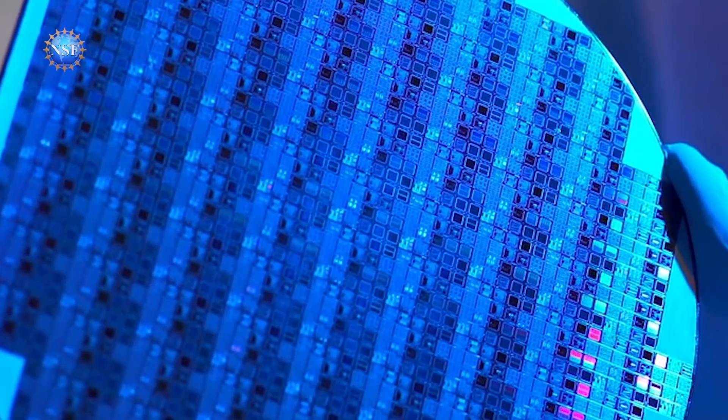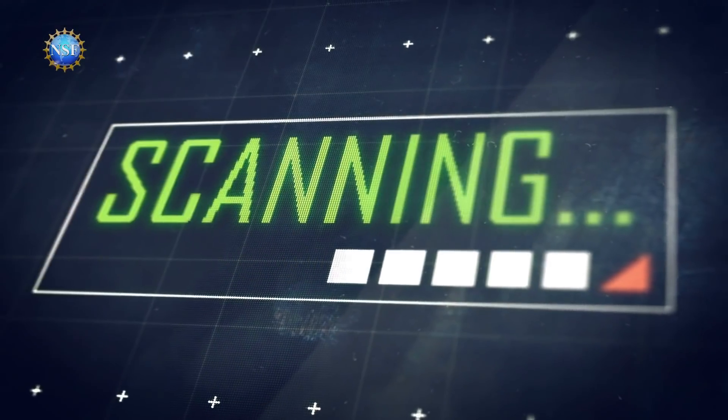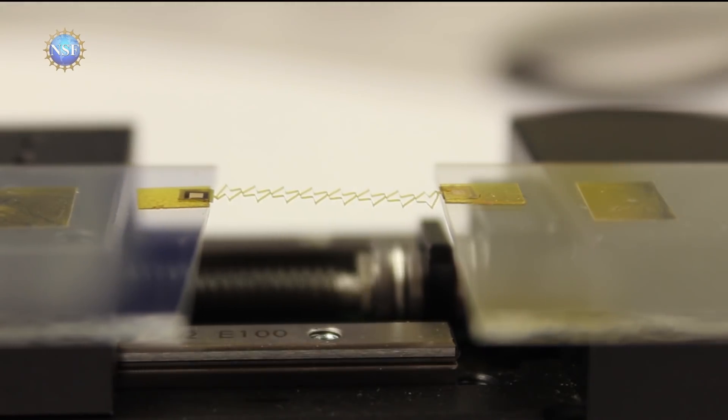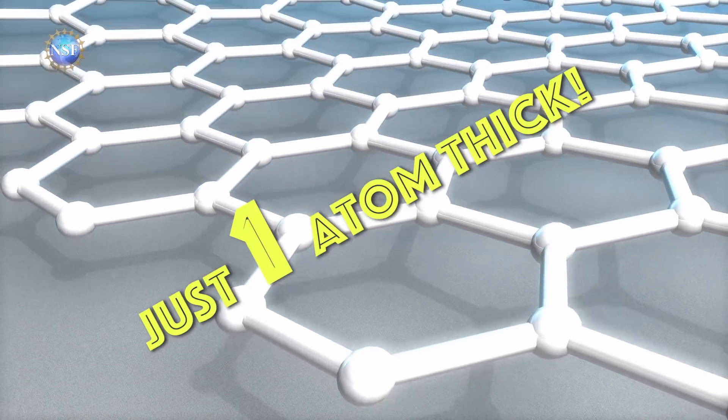As sensors become more common, how do you make them smaller, more durable, and less power hungry? This research team stretched for success, applying kirigami cuts to the world's thinnest material, graphene.